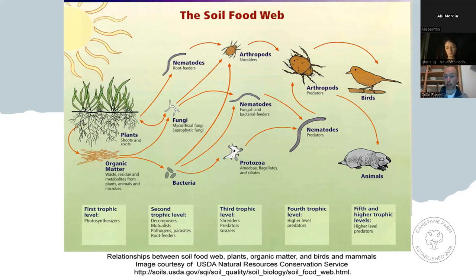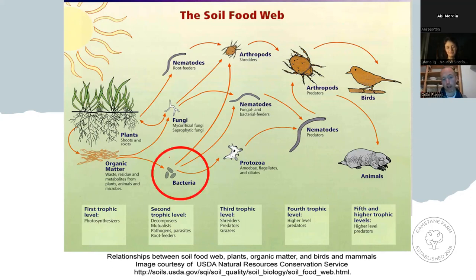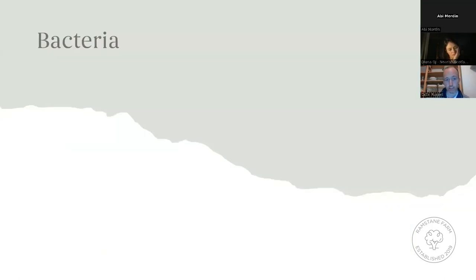When the plant emits that simple sugar, it immediately attracts what we call the trophic levels — specifically the second trophic level, which is the decomposers. The first of these being the bacteria. They come in and start consuming these exudates. I'm going to talk a bit more about bacteria first.